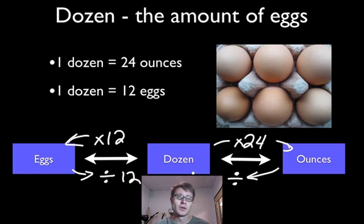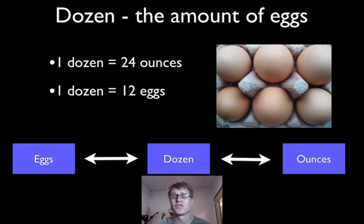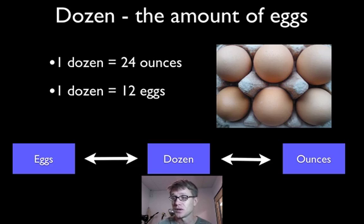If you think about this example when you start talking about moles, the next step shouldn't be scary at all. If I say I have 48 ounces of eggs, how many eggs do I have? You should be able to figure out that's 24 eggs.